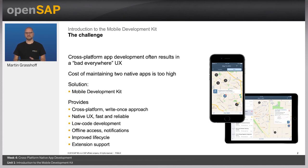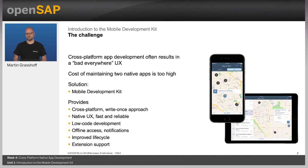This makes sure that you get a native user experience that is fast and reliable. At the same time, we try to bring in an approach that is as easy to maintain as possible, so we lower the development effort and created a low-code environment. The apps that come out of the Mobile Development Kit should provide full offline functionality, as well as notifications and other native features.